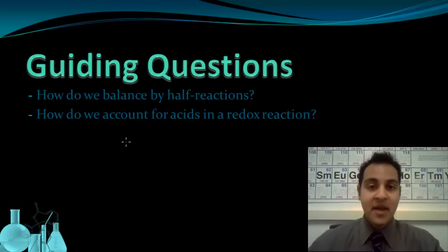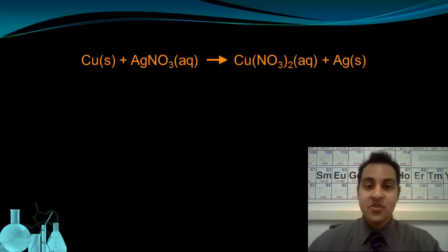And before we actually look at how to balance in an acidic solution, or when an acid is present, we're going to look at Balancing by Half Reactions in the simplest case, just to get an idea for what it looks like. You can click the link at the bottom of this page to skip directly to balancing in an acidic solution. Otherwise, let's consider the copper and silver redox reaction. Here we have copper reacting with silver nitrate to form copper 2 nitrate and solid silver.